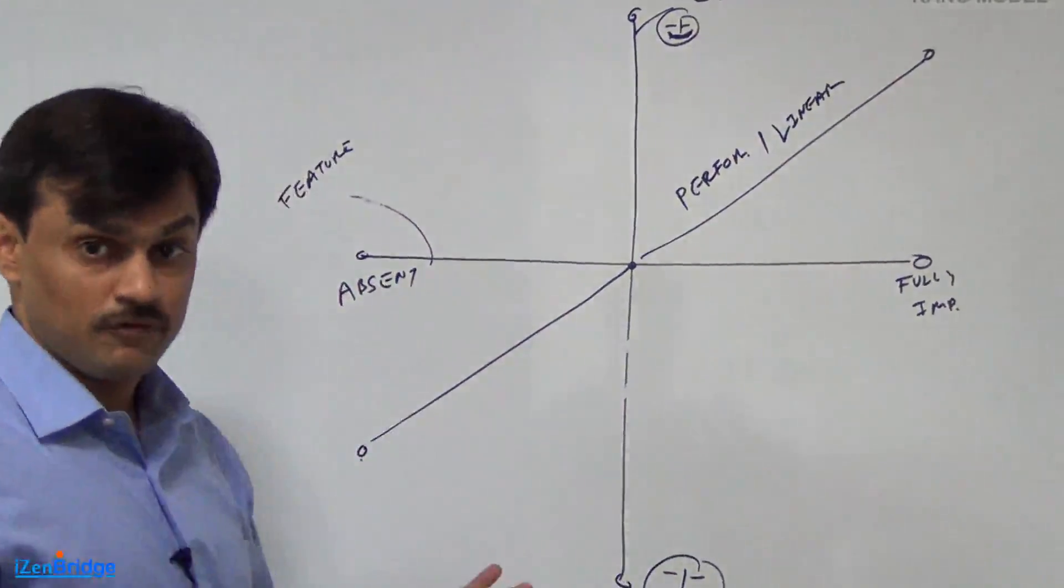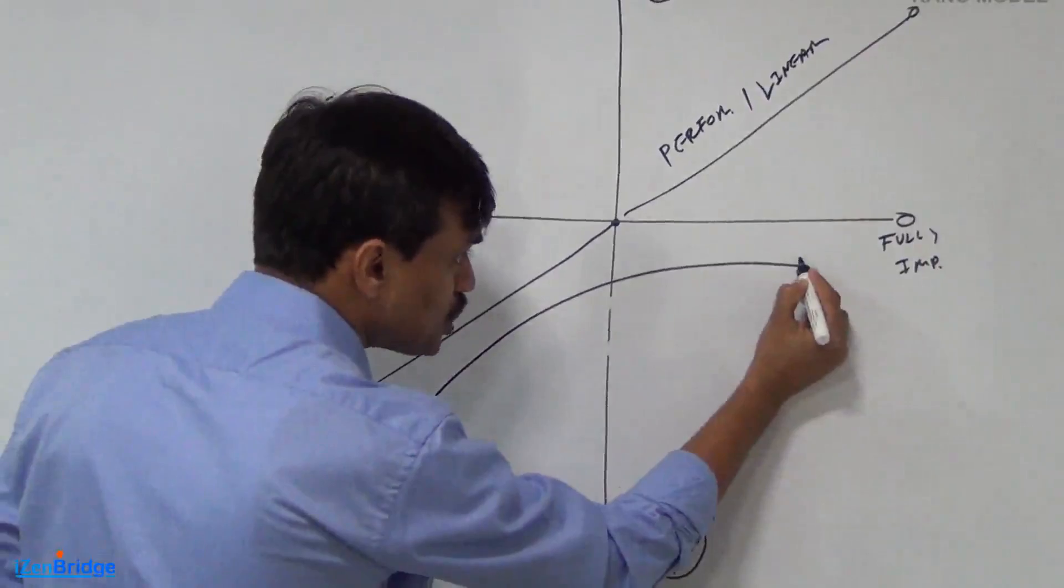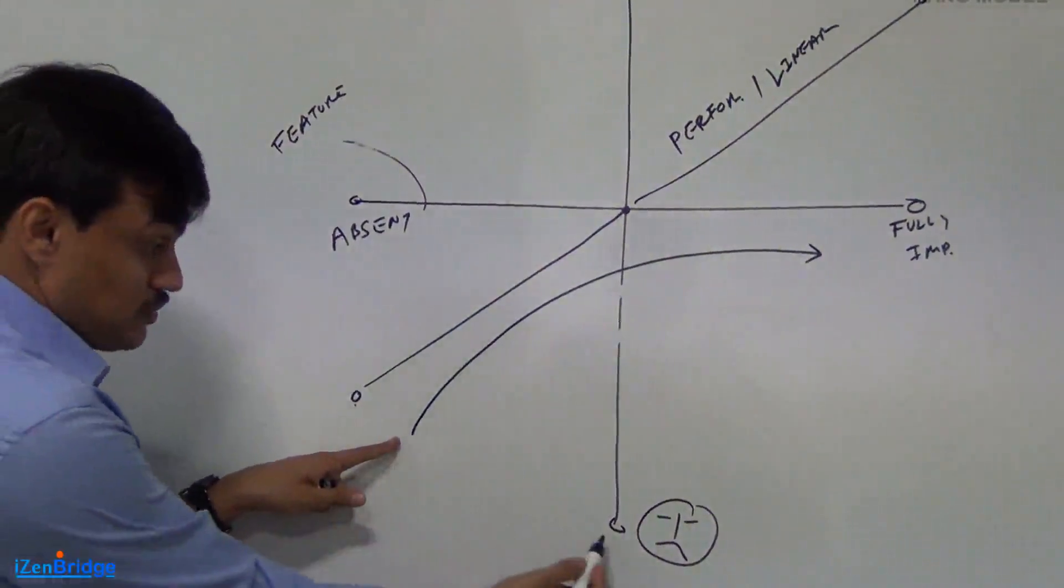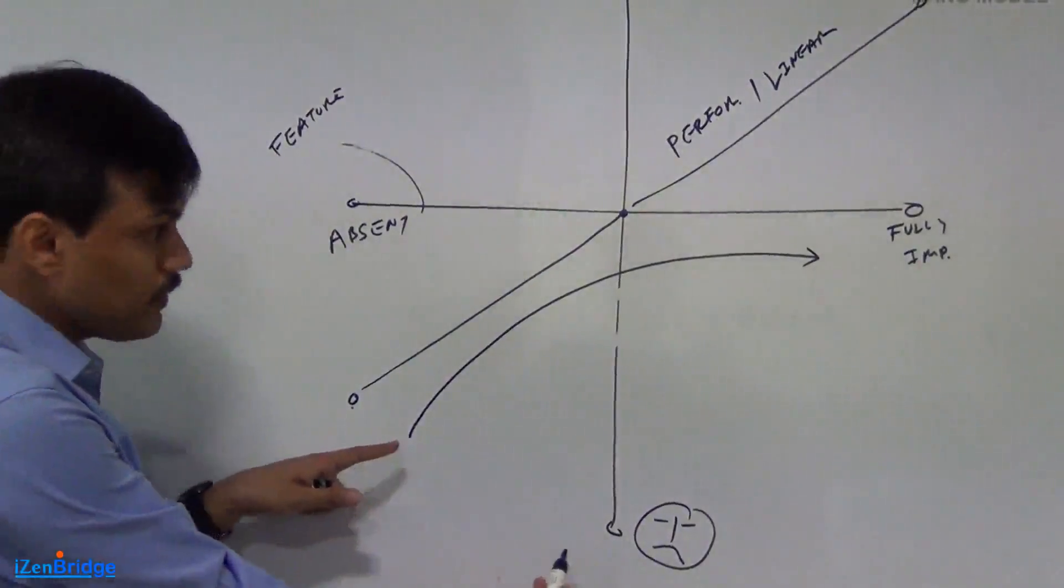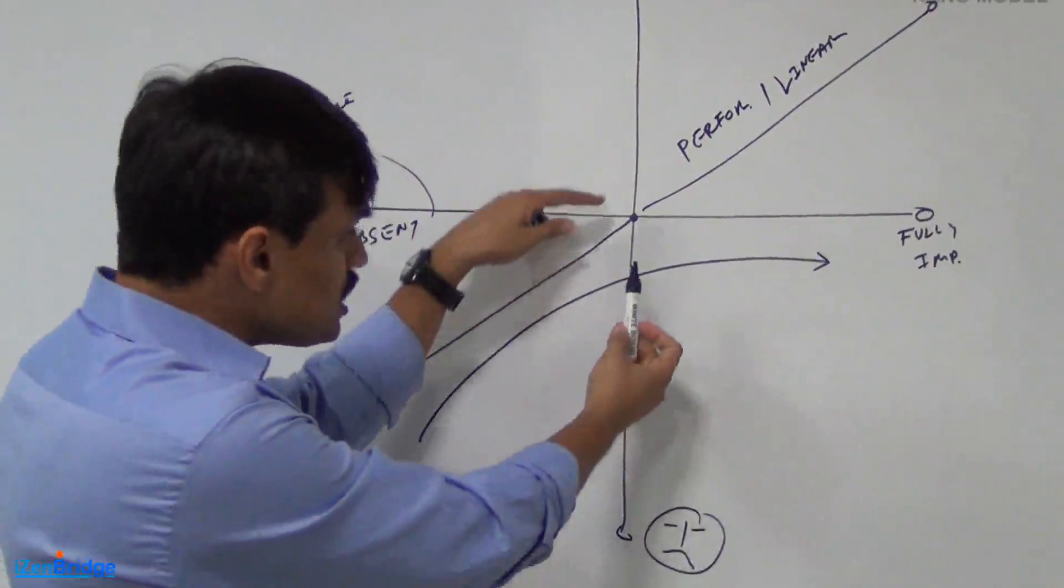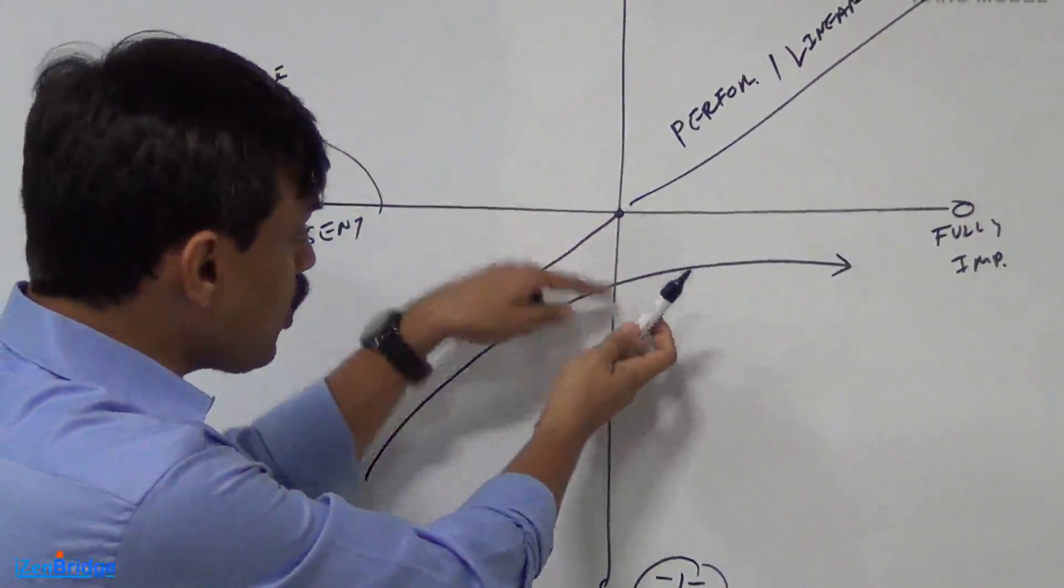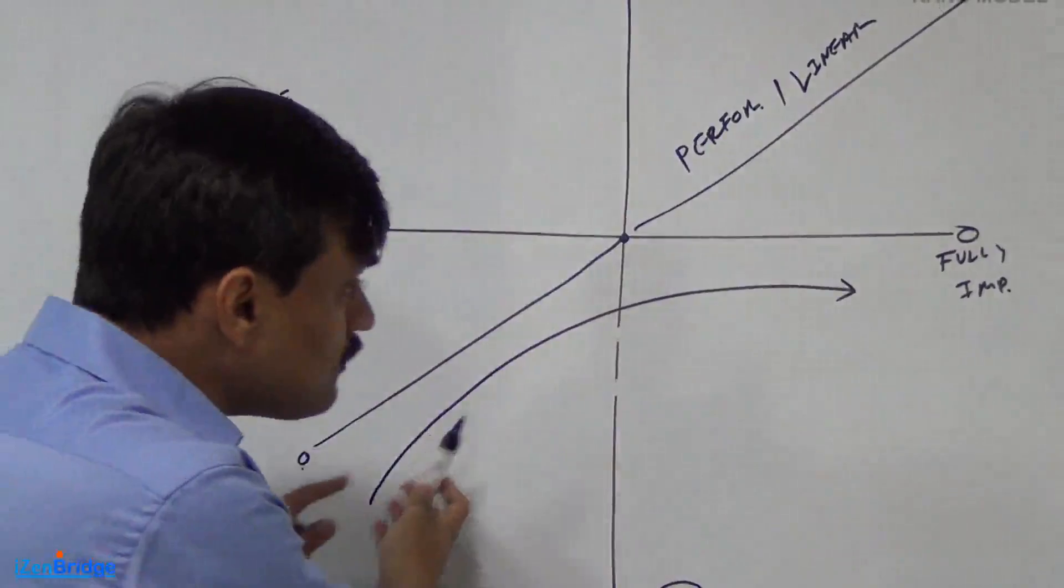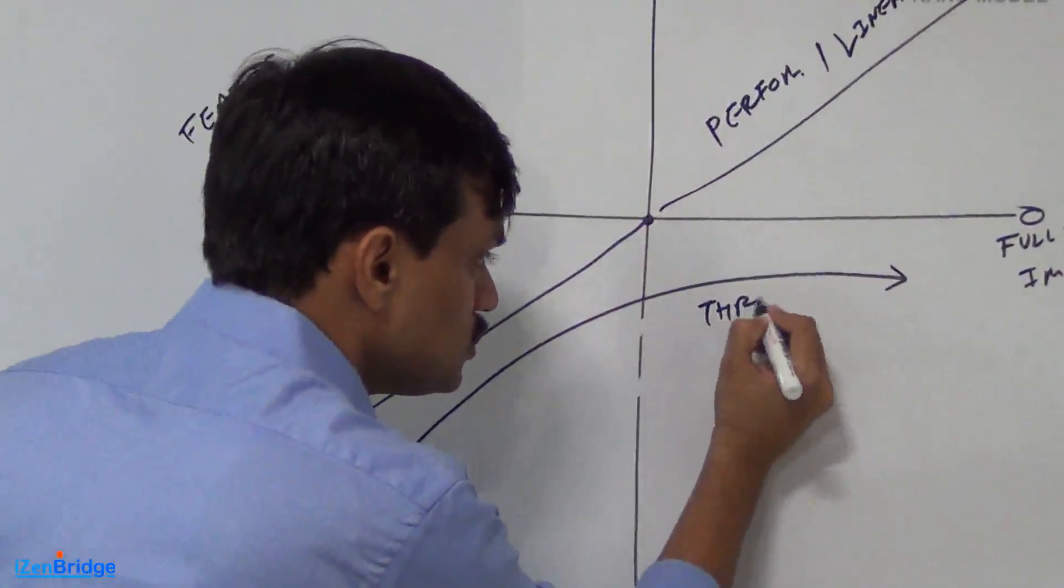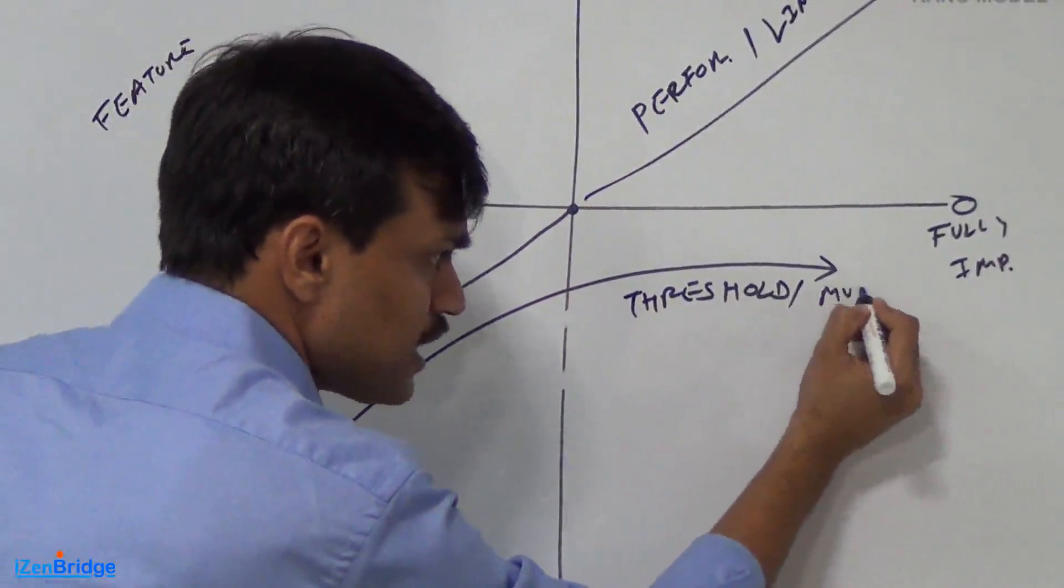Then, we have a second type of features. These type of features are called must have or threshold features. The absence of these features makes customer very dissatisfied but the presence or a fully implementation of these features still keeps customer neutral. The customer is not happy. It is not going in a second segment even if we fully implement those features. They are threshold or we can say must have.